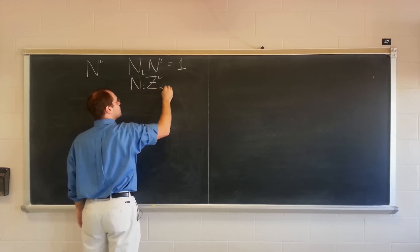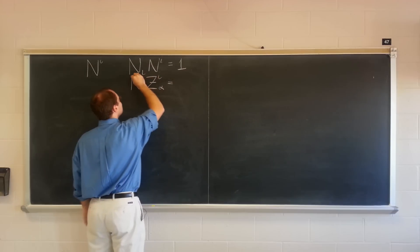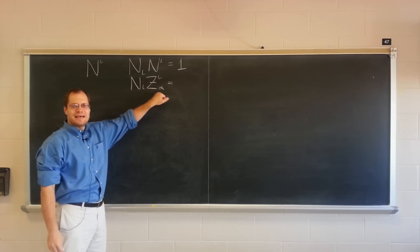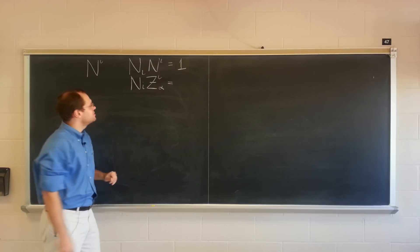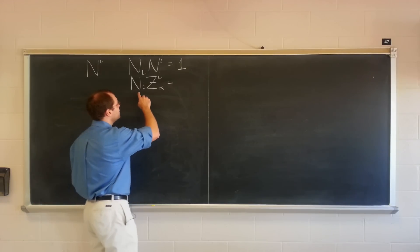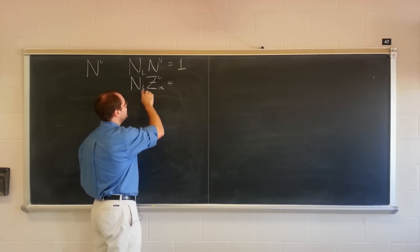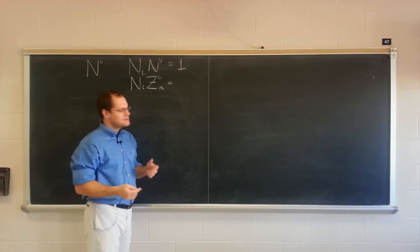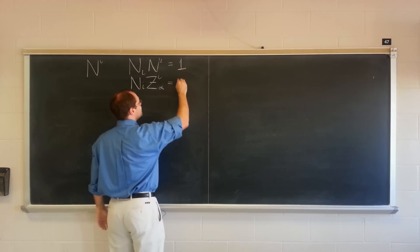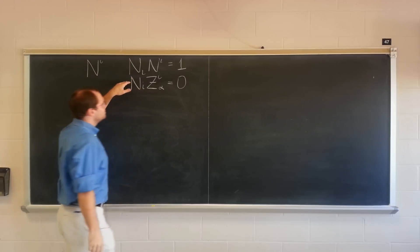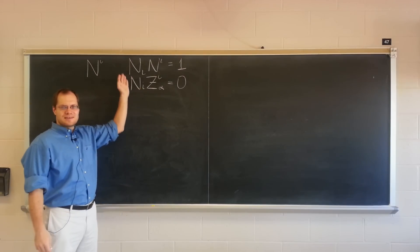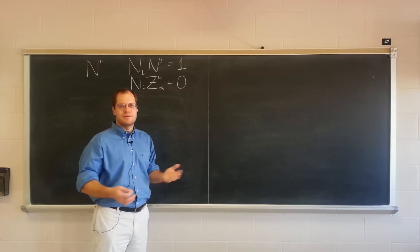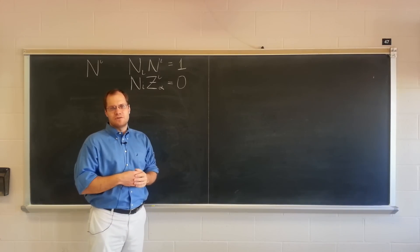Previously, we would write that the normal is orthogonal to the covariant basis by saying n dot s_alpha equals zero. But if you rewrite n dot s_alpha in terms of the components, you will get exactly this. So this defines the normal, as well as the explicit expression, for all practical intents and purposes having to do with the differentiation of the normal.